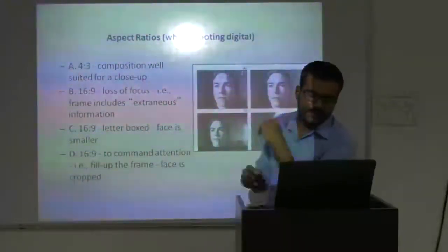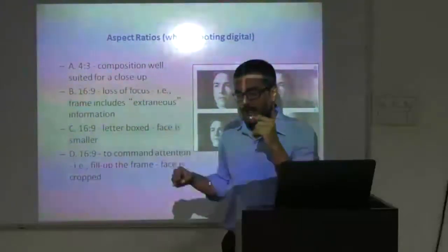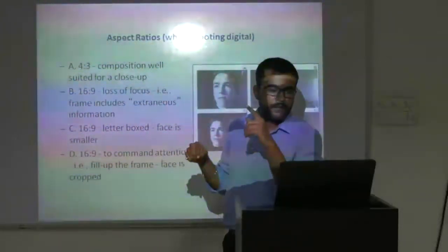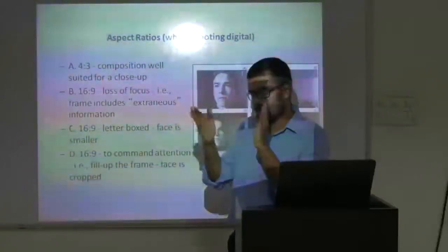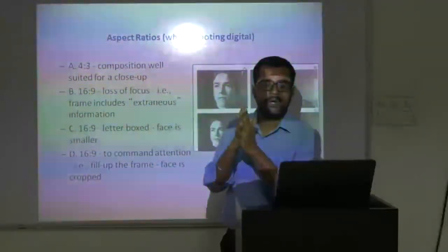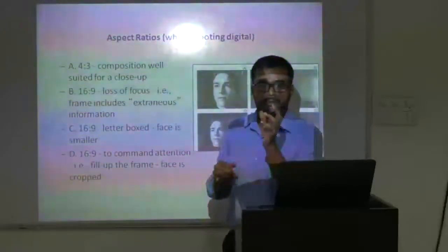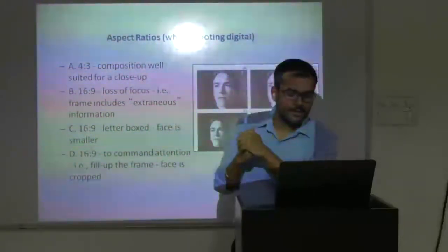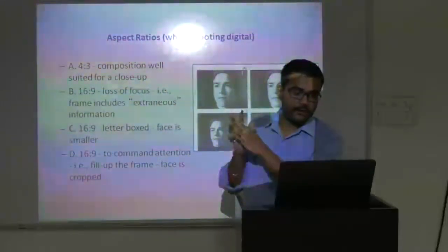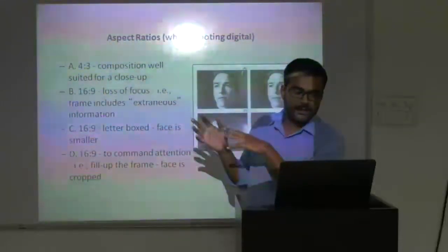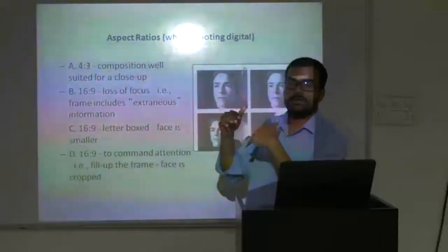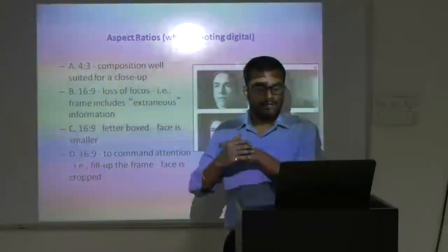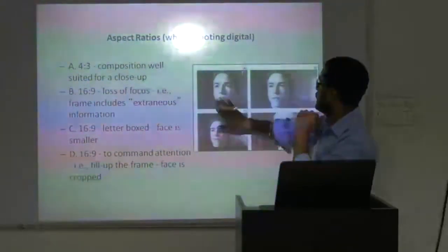Then we have aspect ratio. Aspect ratio is basically the ratio between height and the length of the frame, which changed over time. What is the aspect ratio of this computer screen? This is 16 to 9. So when we use 4 to 3 composition, which is well suited for close-ups, we don't crop the head or chin if we are taking an extreme close-up shot.